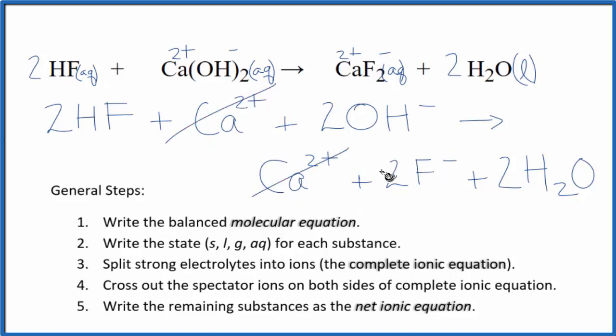Everything else is unique. That is the net ionic equation for HF plus Ca(OH)2. I'll clean it up, write the states in, and we'll have our net ionic equation.